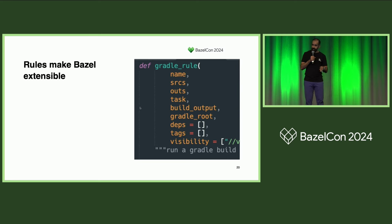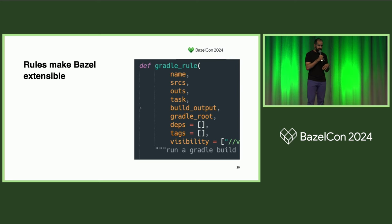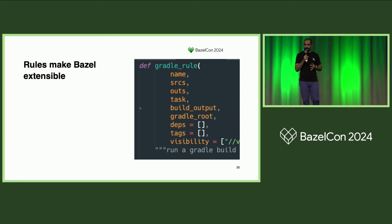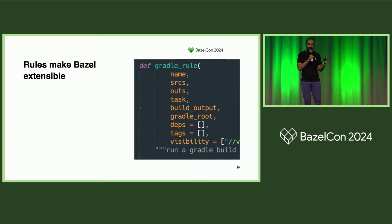Unity integration looks fairly similar — we have an internal rule set that exports Unity as an Android library, and we can depend on that as a regular dep from our Android app. We also use aspects and file-copying rules so that we can use Bazel for protobuf compilation for C#, meaning Unity doesn't need any deeper integration with Bazel.